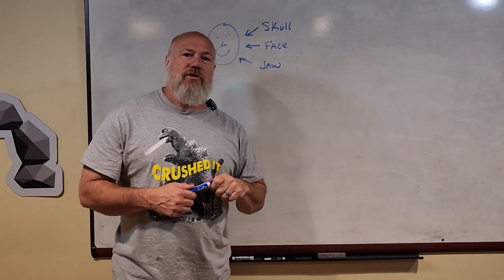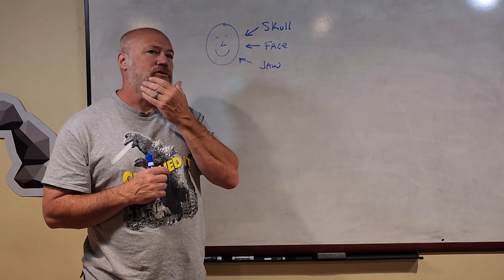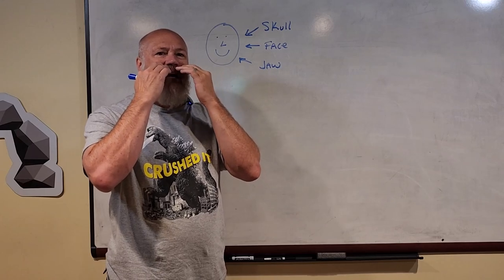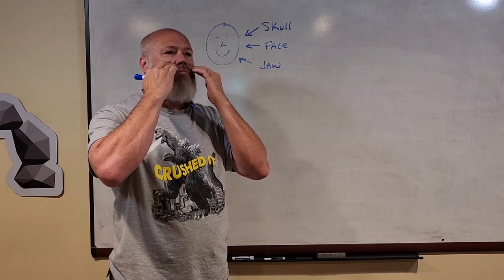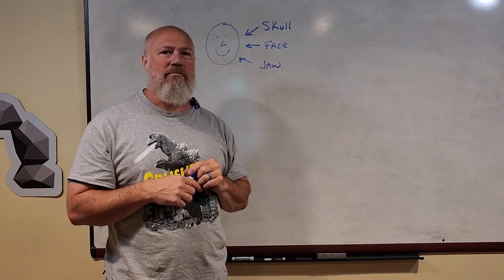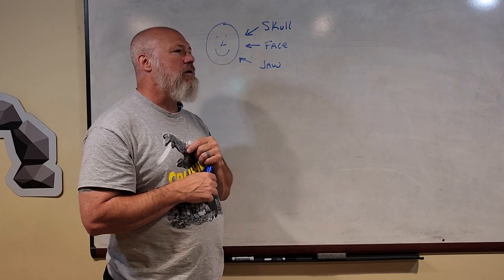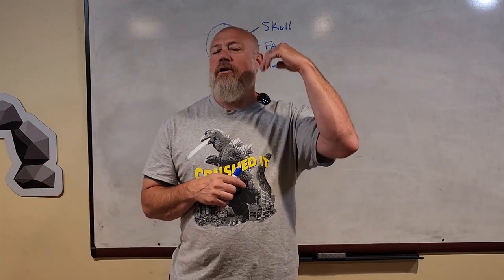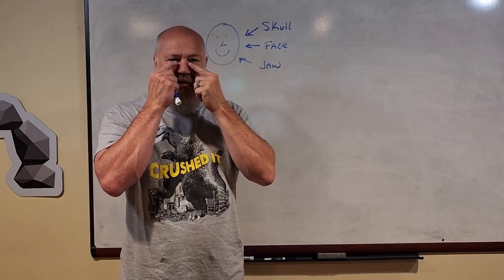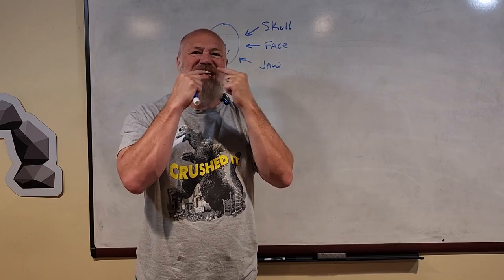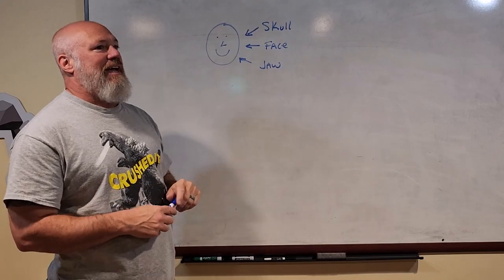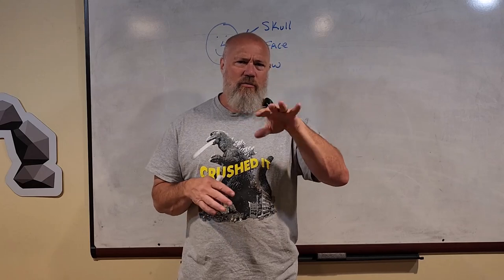Your skull and face are made up of 22 bones. Your jaw is the part that moves when you talk or chew — put your hand on your chin and feel it move. Notice the top part of your jaw, where your upper teeth are, doesn't move at all; only the bottom jaw moves up and down, side to side, and in and out. Your skull protects your brain, your face holds your eyes and nose, and your jaw opens and closes like a trap.